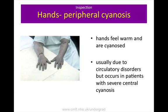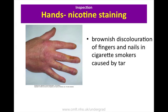Peripheral cyanosis is a bluish discolouration usually seen in the fingers and toes. It is characteristically seen in patients with circulatory disorders or in patients exposed to the cold, but can occur in patients with severe central cyanosis. The peripheries in respiratory patients with severe central cyanosis are usually warm, but in those with circulatory problems the hands are usually cold. Nicotine staining is typically a brownish stain on the fingers and nails in cigarette smokers, caused by tar and not nicotine.